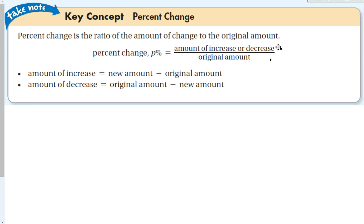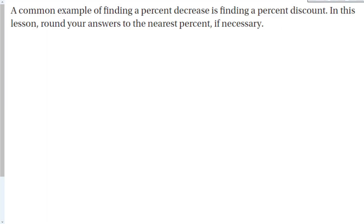On the top of the formula is the amount of increase or decrease. We want to keep these numbers positive, so we don't introduce negatives. For an increase, we use new amount minus original amount, since the new amount is bigger. For a decrease, we use original amount minus new amount, to keep the numerator positive since the new amount is smaller. A common example for percent decrease is finding a percent discount. In this lesson, round answers to the nearest percent.